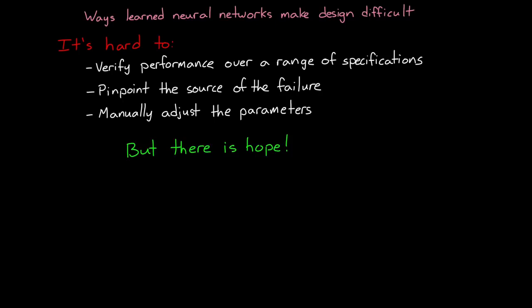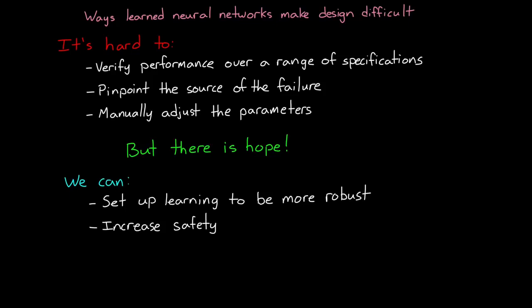But I don't want to destroy your confidence in reinforcement learning as a useful tool for production systems, because with all of that being said, there are ways to set up learning so that the resulting policy is more robust in the presence of uncertainties. There are also ways to increase safety and make reinforcement learning a viable option for production systems. And we can even use reinforcement learning to solve a slightly different problem, one that avoids a lot of these issues in the first place. So let's end this video on a positive note and talk about all three of these.